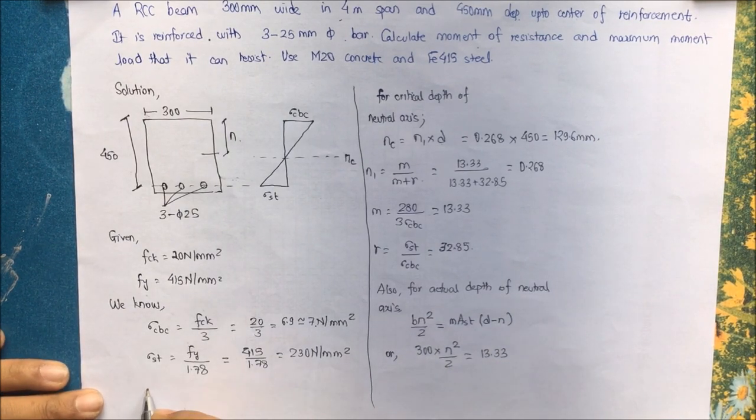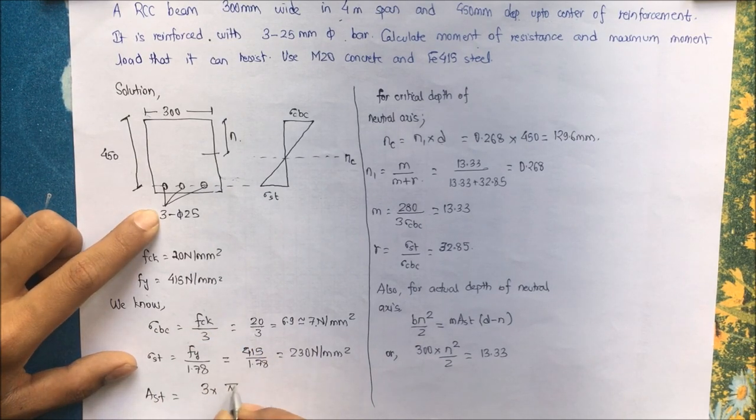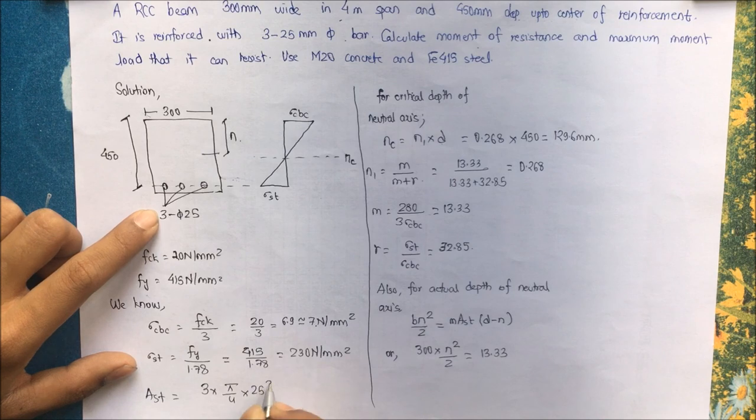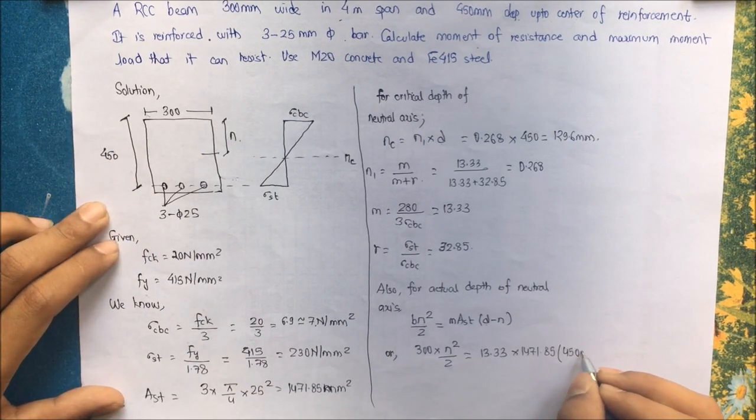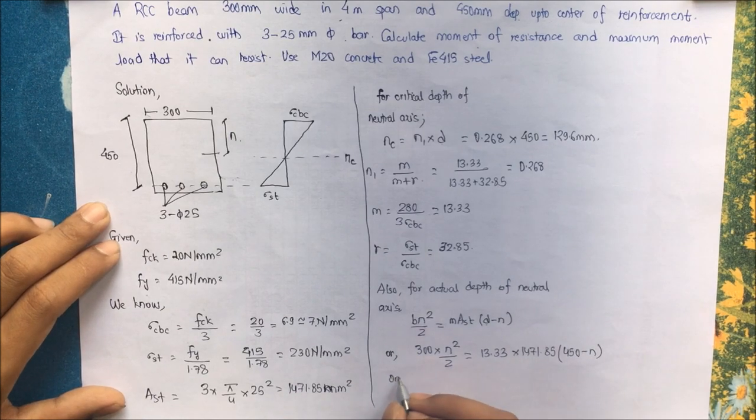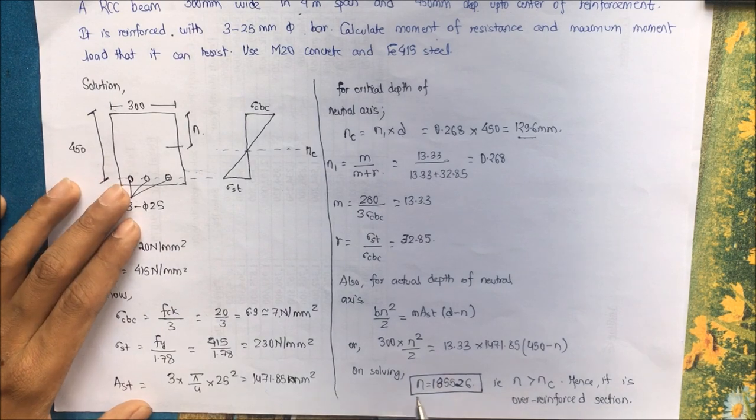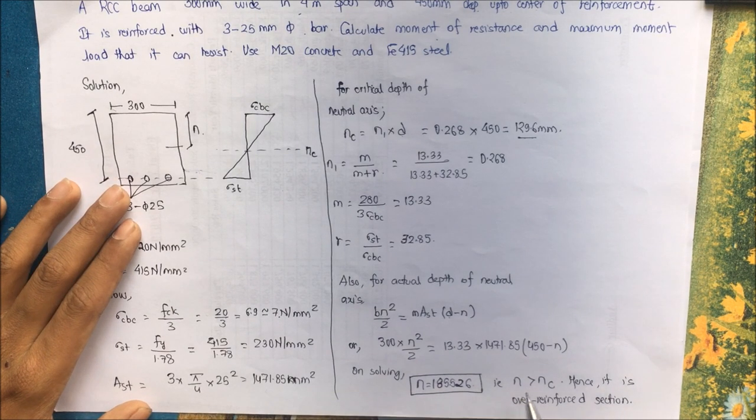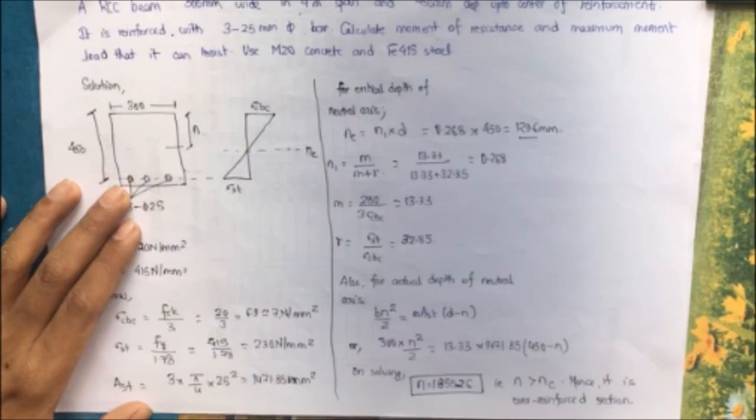Ast, area of steel provided, so 3 into pi by 4 into D square, that is just a simple formula of circle, and we get this as 1471.85. Substitute this value, D being 450. On solving we get the value of N, that is 185.526.